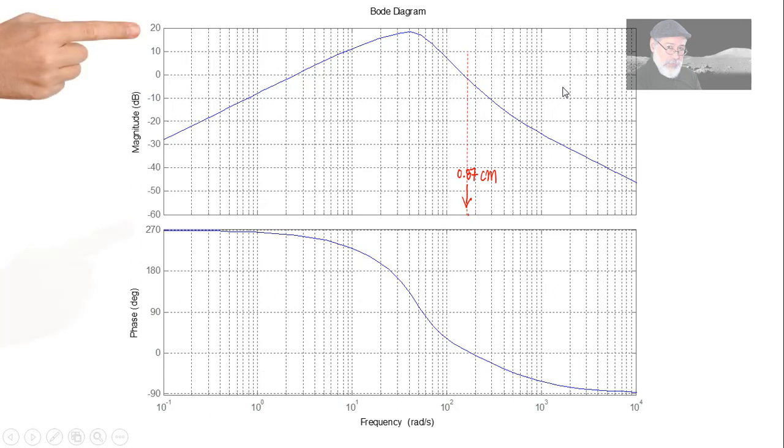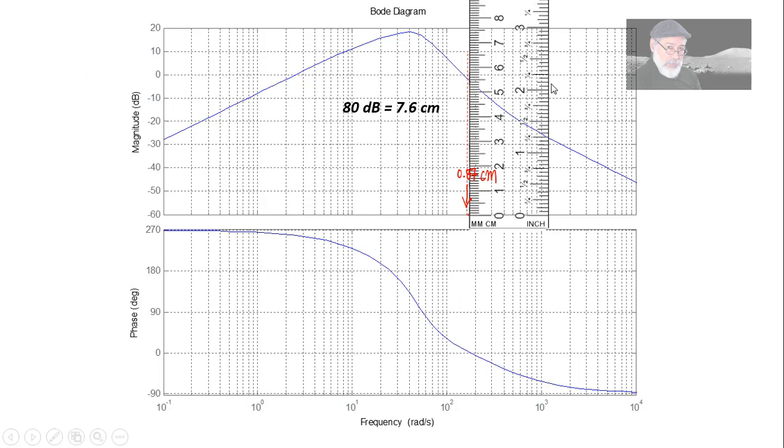Between negative 60 and 20 decibels there are 80 decibels. And that measured on the ruler is 7.6 centimeters.